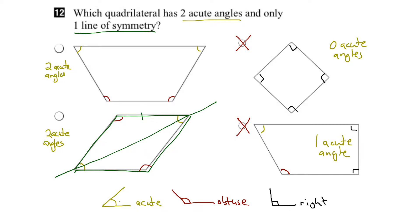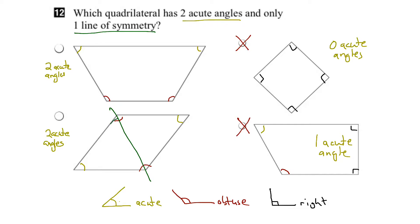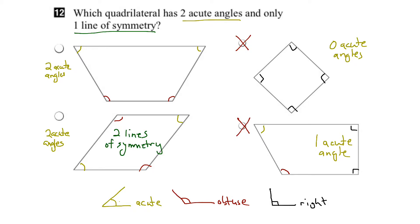So we've found one line of symmetry. Let's try the other diagonal direction. If I draw a line through here and flip this side over this line of symmetry, we'd end up with a shape that also matches up, so it is also a line of symmetry. So this shape has 2 lines of symmetry, and since we're only looking for 1 line of symmetry, this is not an option for the answer.